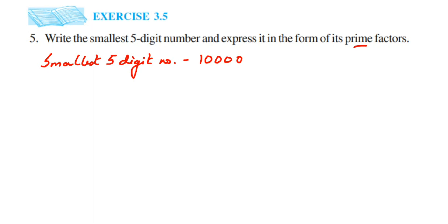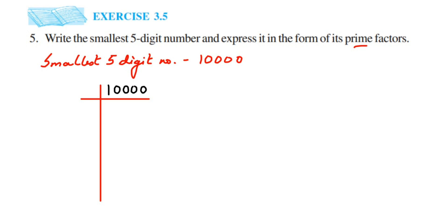For this question, I'm going to use the prime factorization method, where you take only prime numbers and divide 10,000. Remember, you should take only prime numbers, and it's better to start with the smallest prime number, which is 2. I'm going to write down 10,000 here and draw a vertical and horizontal line, writing the number inside.